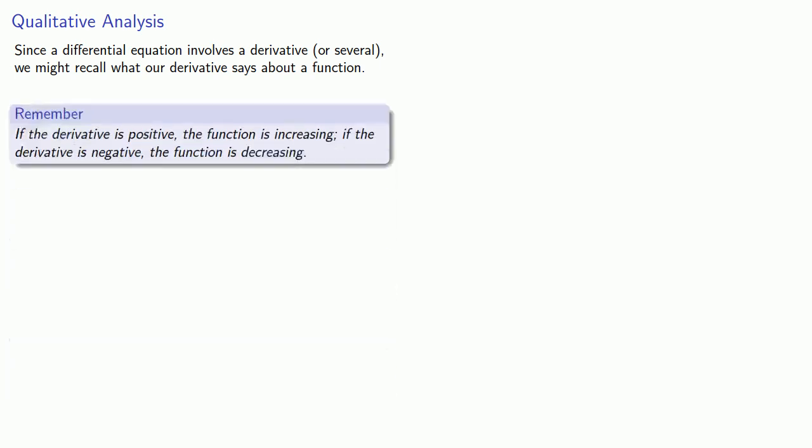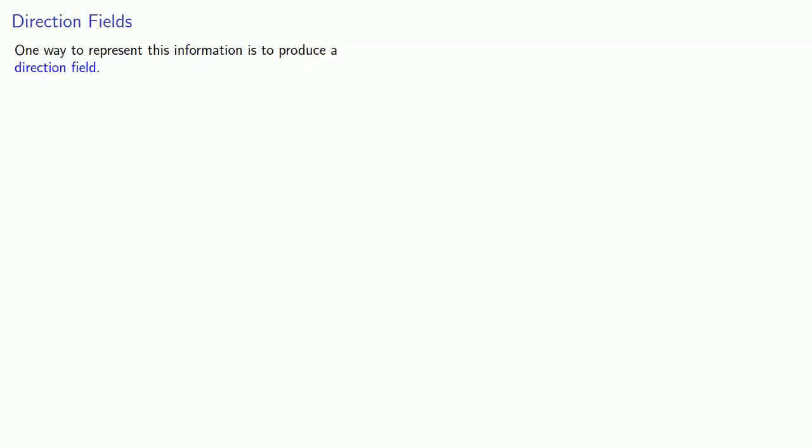Remember, if the derivative is positive, the function is increasing. And if the derivative is negative, the function is decreasing. One way to represent this information is to produce a direction field. And the idea is this.